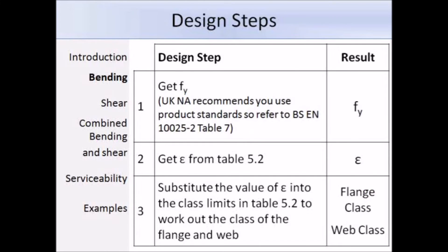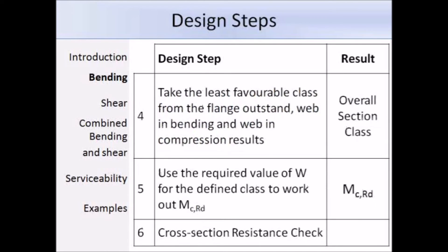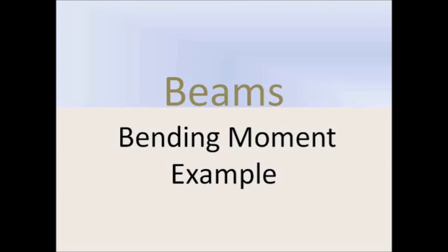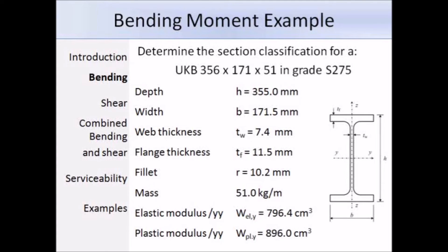Now you're going to go through a hand calculation using the design steps in the previous slide. This is an example from the Access Steel website, and we have a 356×171×51 UB in grade S275 steel. The first thing we need to do is classify. Here we have a list of the section properties that we will need in order to classify the section and to calculate the design bending moment resistance.